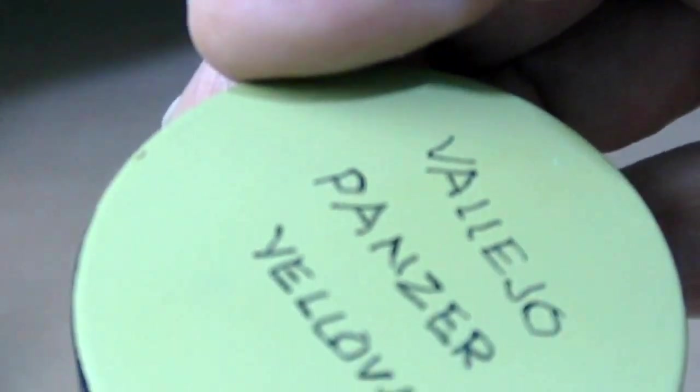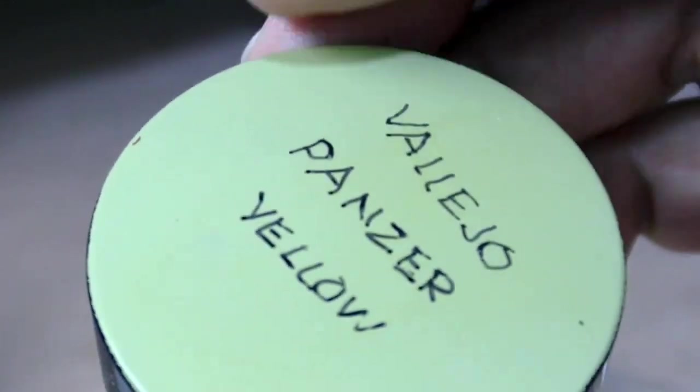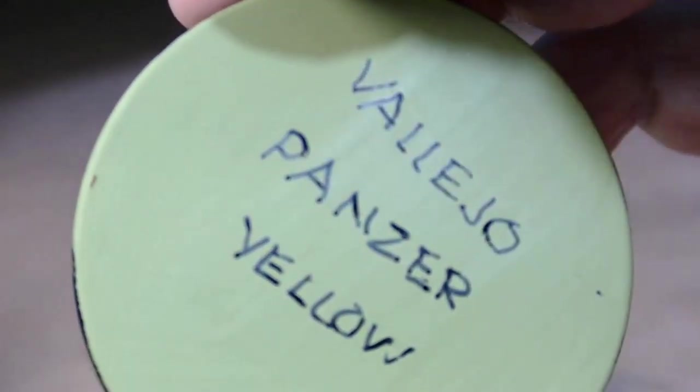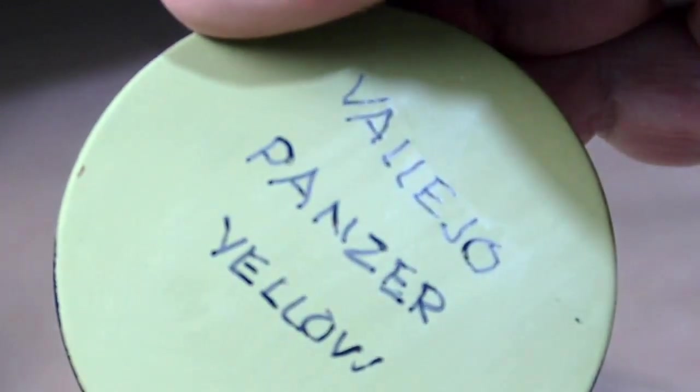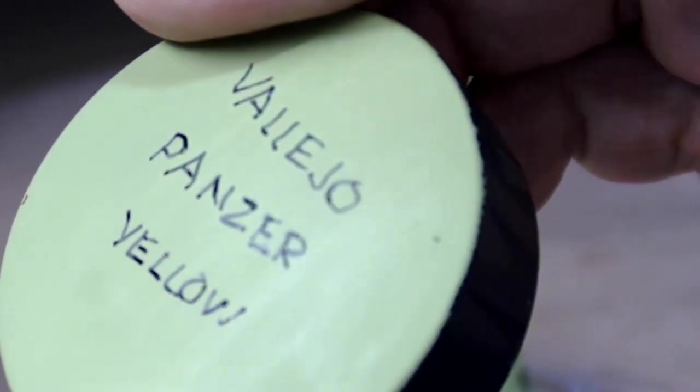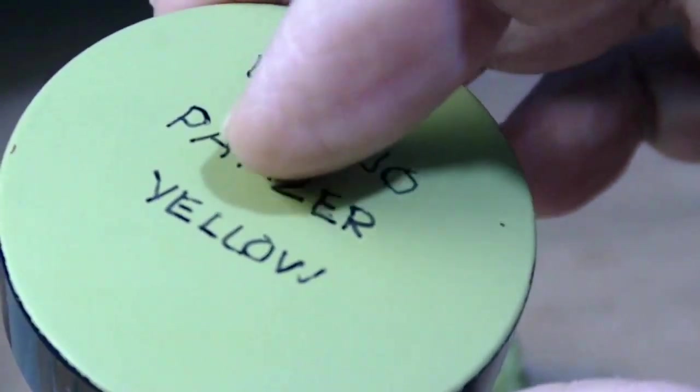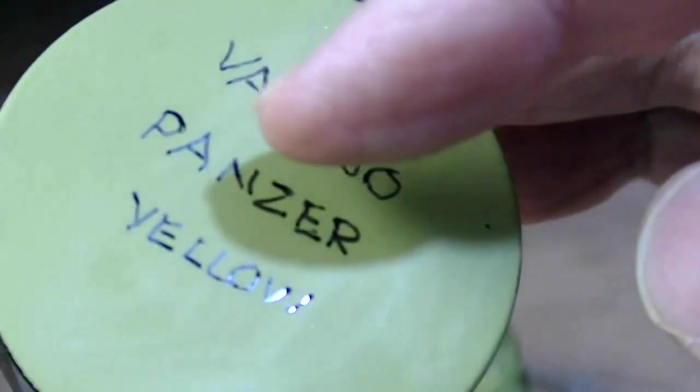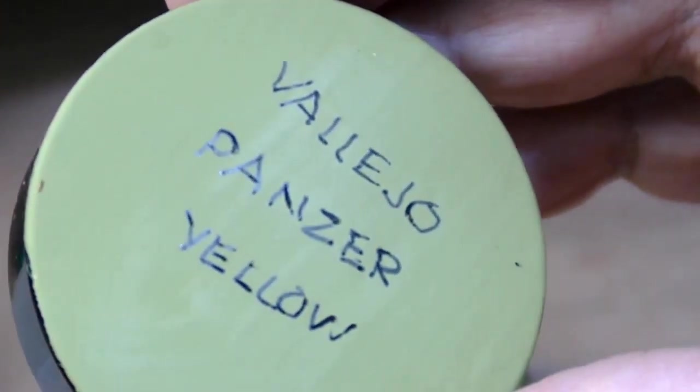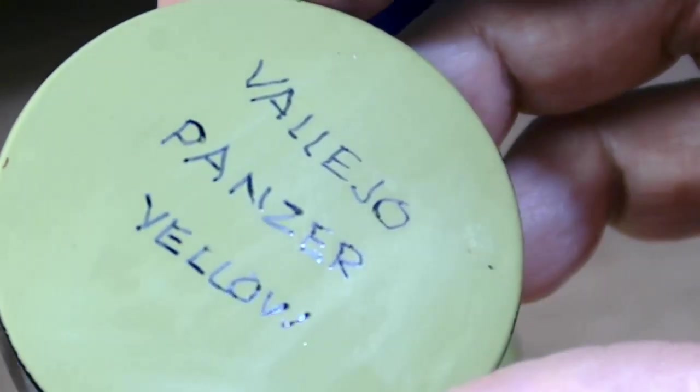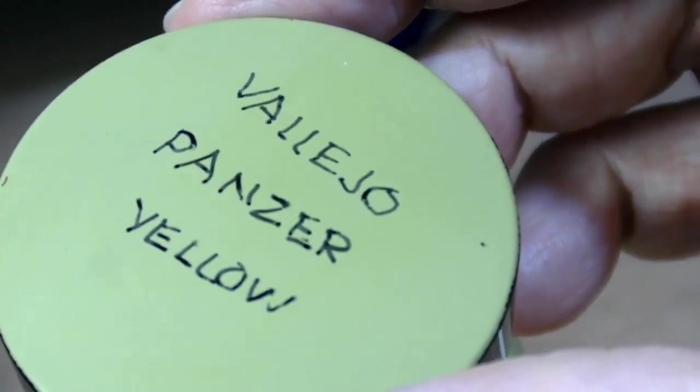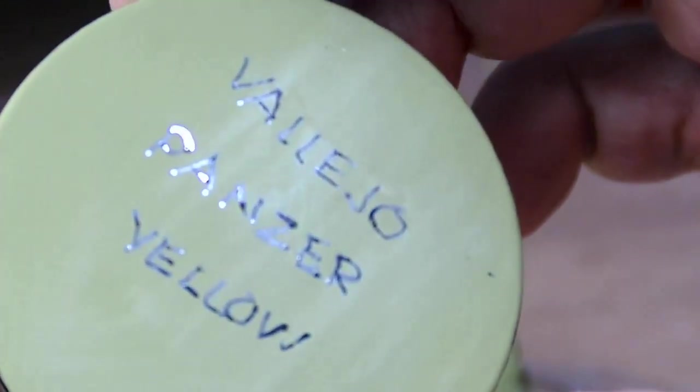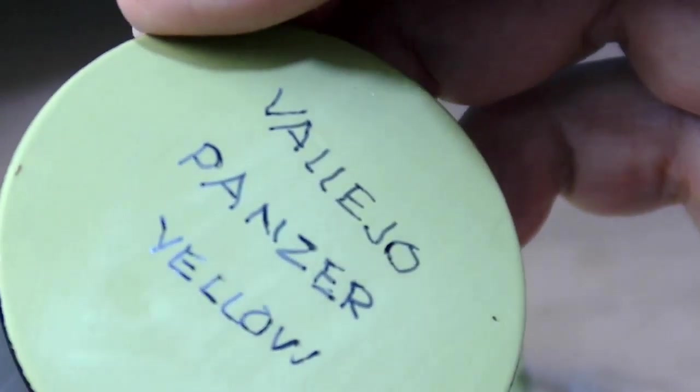When that dries, it's going to look like the lid on this jar, which as you can see is pretty much free of brush marks. There's a pattern of reflectance that you can see, and that will go away when you put on a coat of flattener. And I don't spray the flattener either—that gets brushed on too.